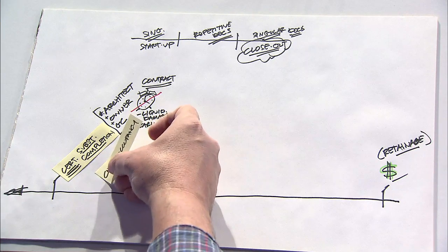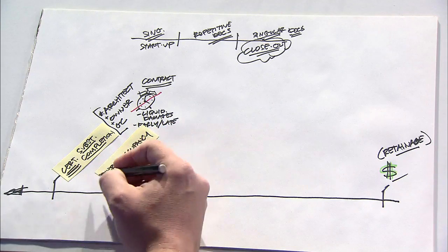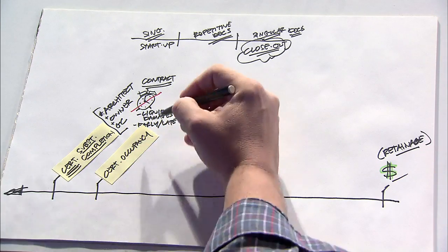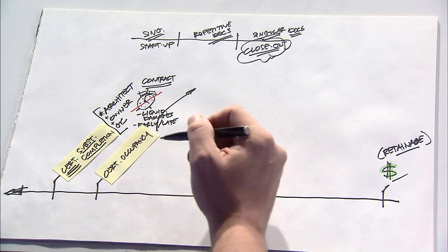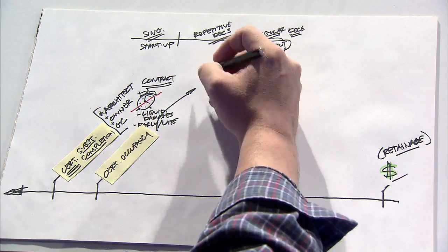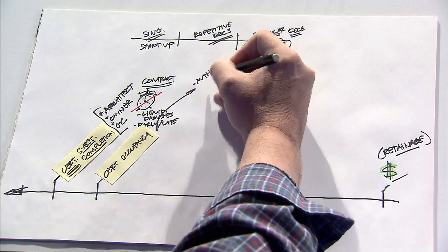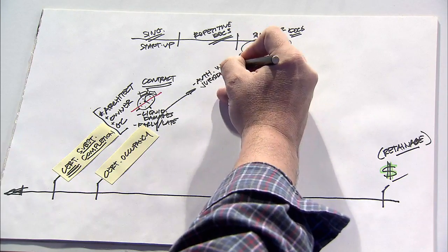Another certificate that is issued in the closeout phase is the Certificate of Occupancy. In many ways, the Certificate of Occupancy is very different than substantial completion.